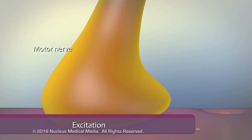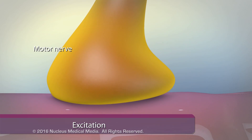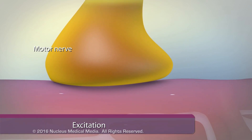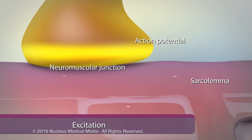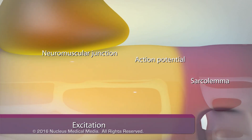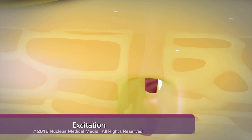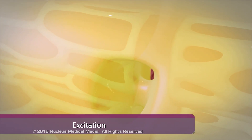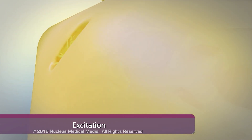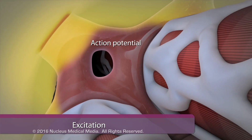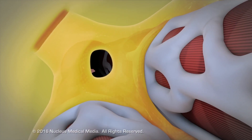In the first step of muscle contraction, called excitation, a motor nerve fires an impulse, or action potential, across the neuromuscular junction, depolarizing the sarcolemma and generating an action potential that spreads through the sarcolemma into the T-tubules and excites the muscle fiber.